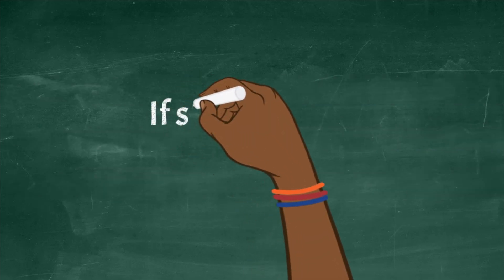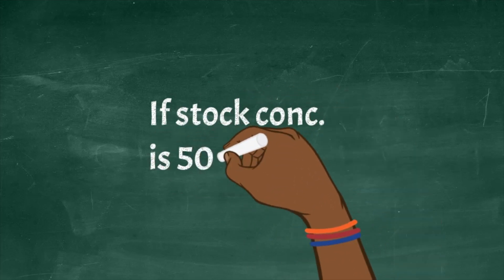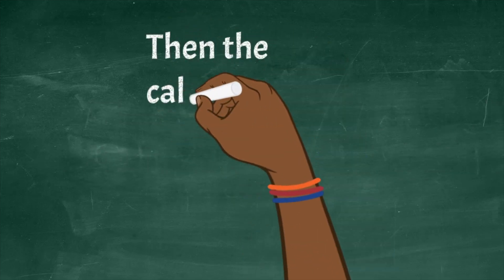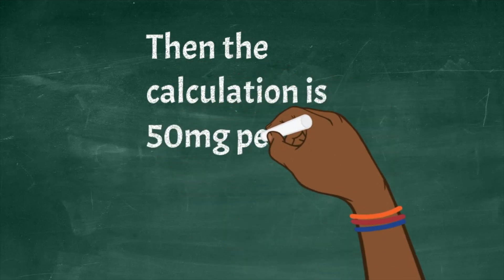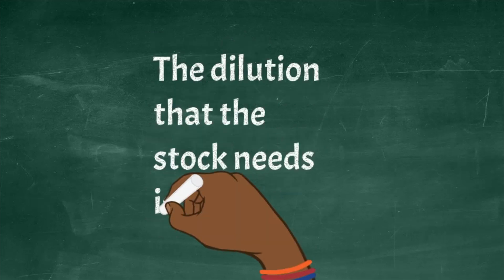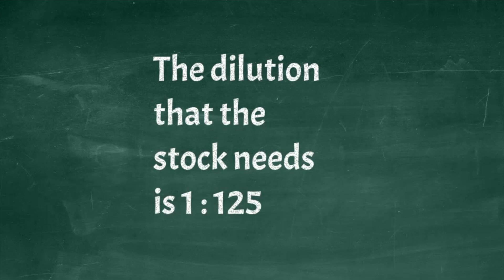If for example the stock concentration is at 50 mg per ml and we are looking for 0.4 mg per ml, then we simply do that division to know what the dilution should be. We would do 50 mg per ml divided by 0.4 mg per ml, and we get a dilution ratio of 125.